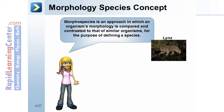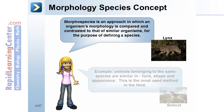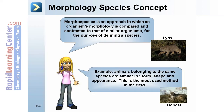Morphospecies is an approach in which an organism's morphology is compared and contrasted to that of similar organisms for the purpose of defining a species. Animals belonging to the same species are similar in form, shape, and appearance. This is the most used method in the field.